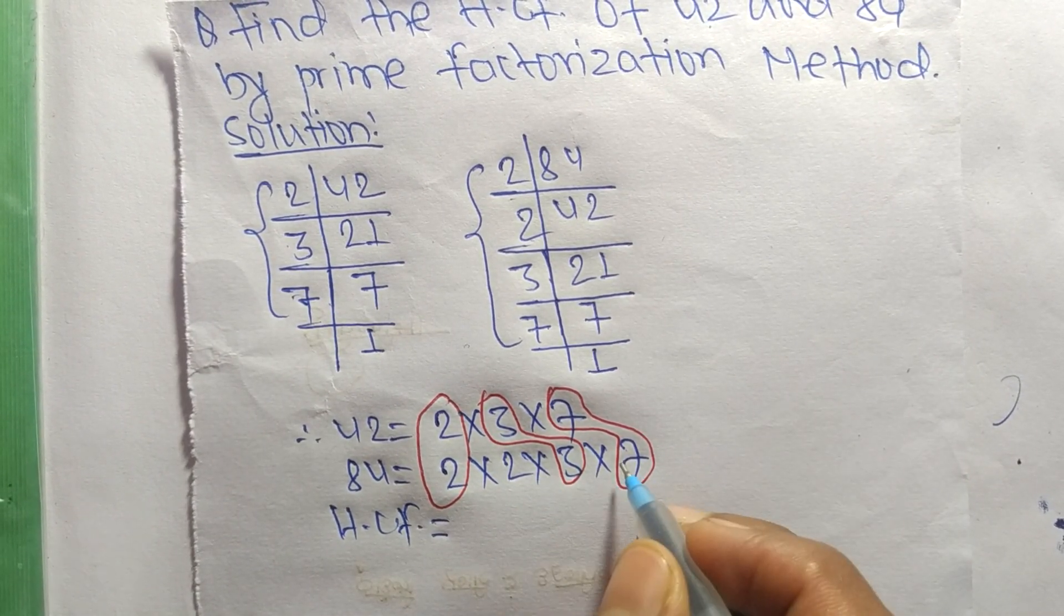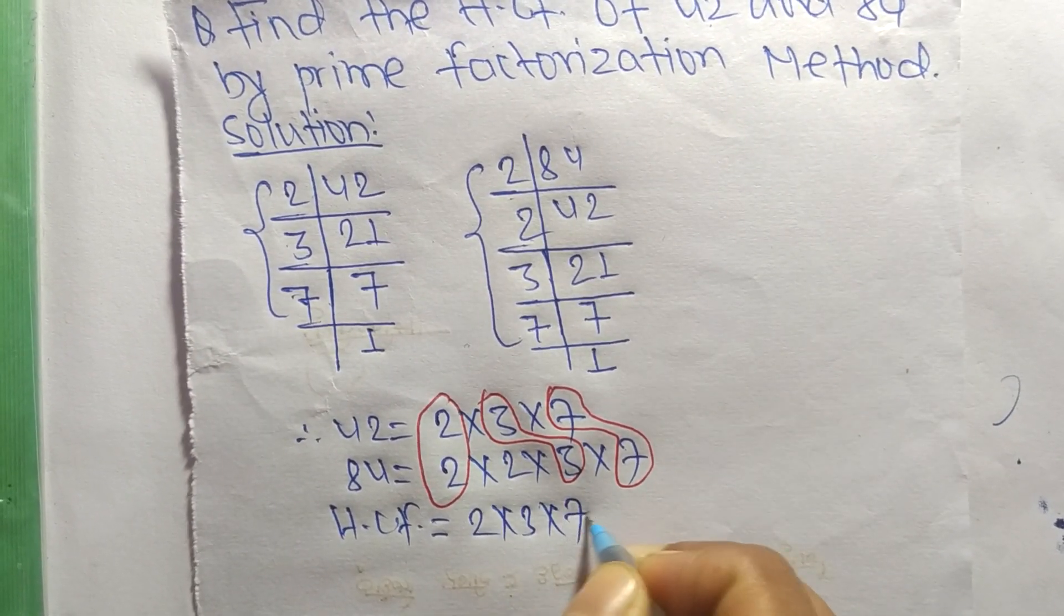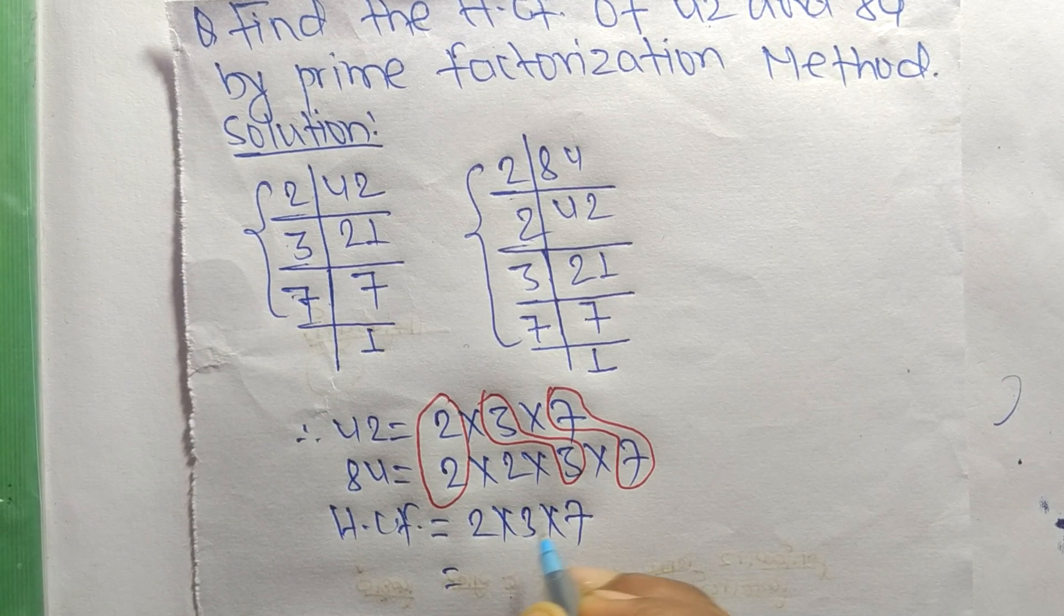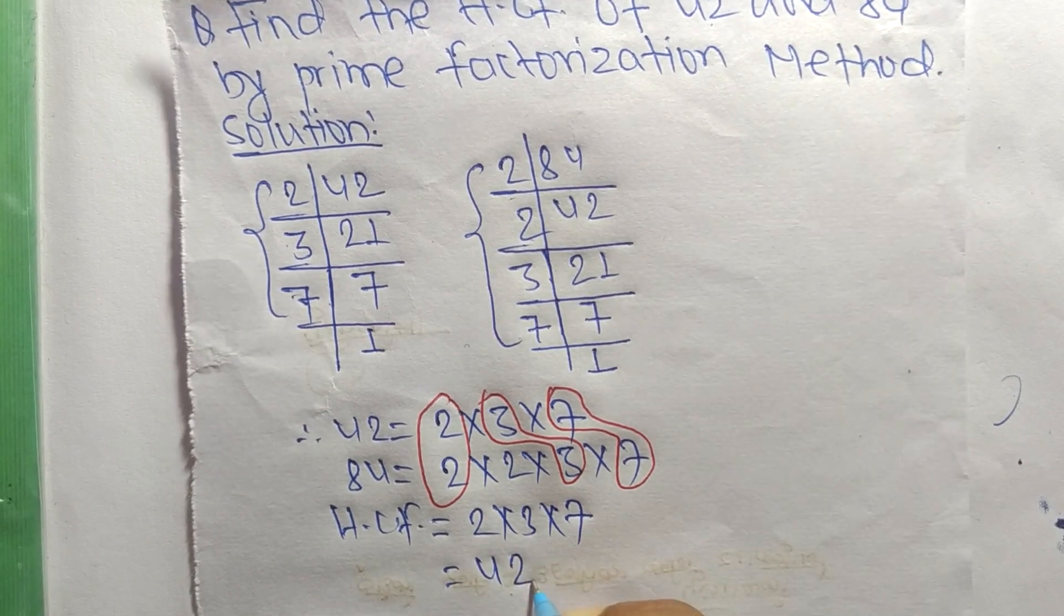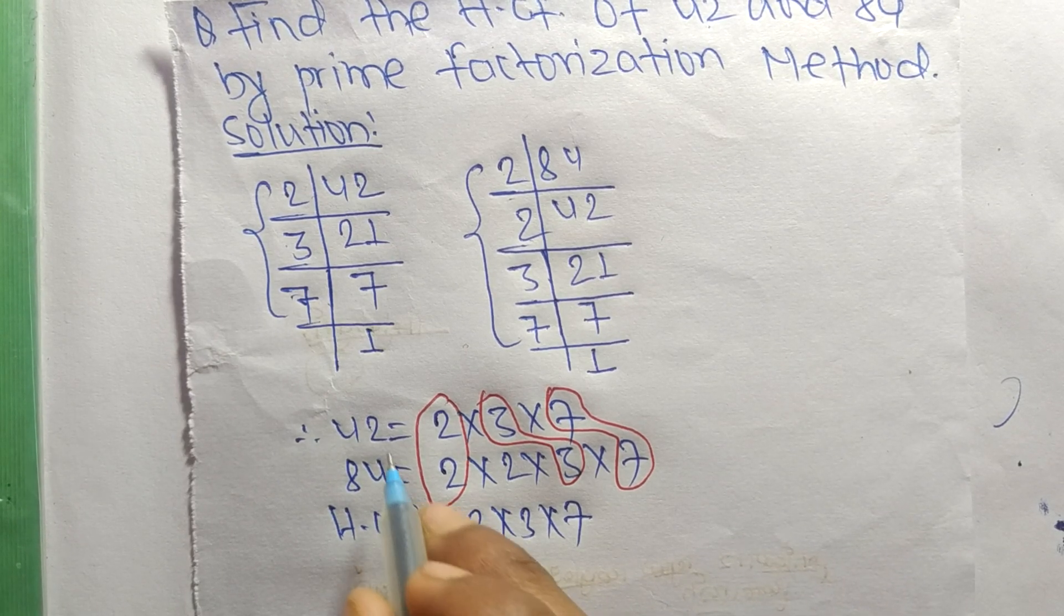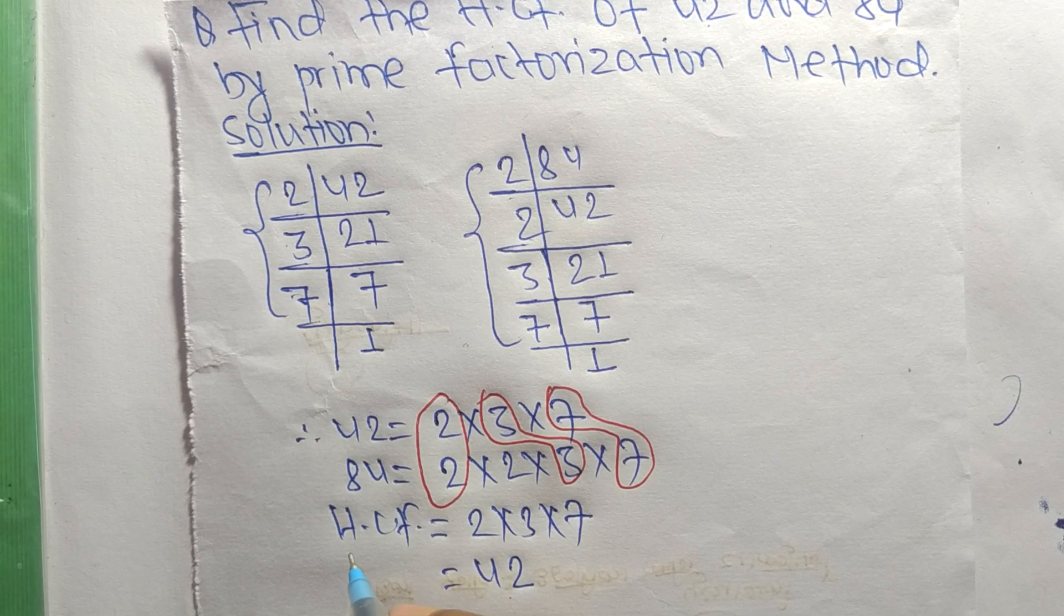So 2 times 3 equals 6, and 6 times 7 equals 42. So 42 is the HCF of 42 and 84. So this much for today and thanks for watching.